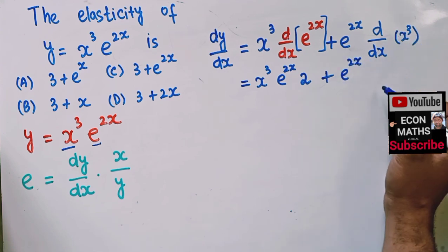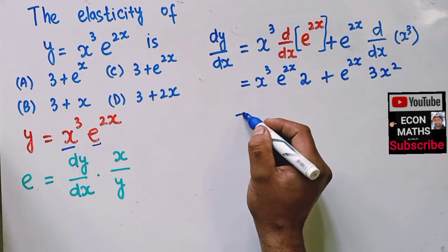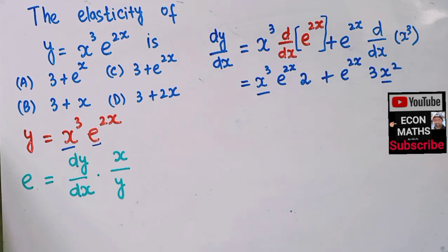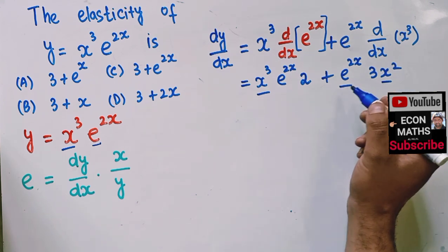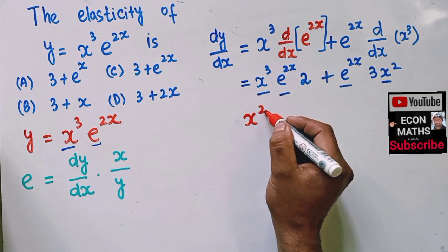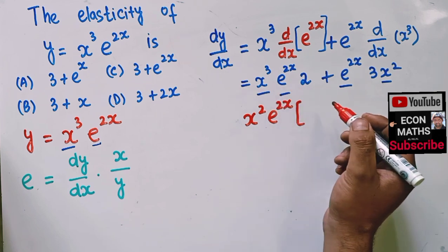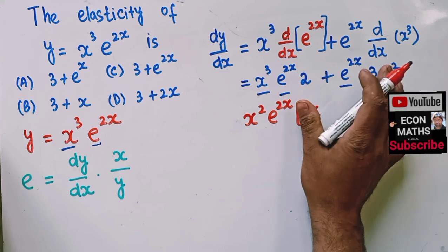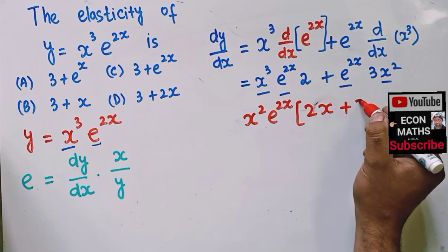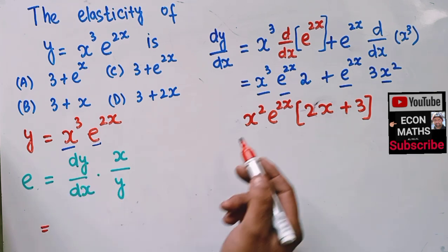By the power function rule, the derivative of x³ is 3x². So dy/dx = x³·2·e^(2x) + e^(2x)·3x². Now let's simplify: we can take x² and e^(2x) common, so we get x²·e^(2x)·(2x + 3).